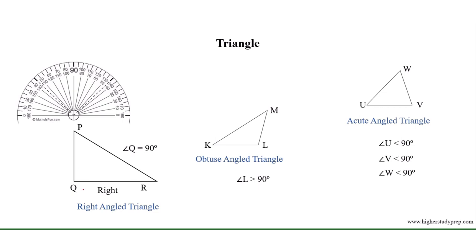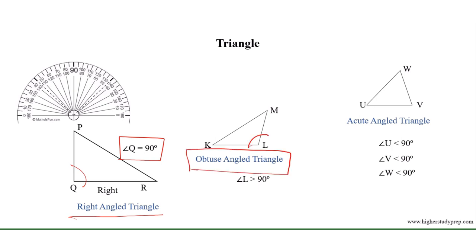A right angle triangle is a triangle where one angle is equal to 90 degrees. An obtuse angle triangle is a triangle where one angle is greater than 90 degrees. And an acute angle triangle is a triangle where all three angles are less than 90 degrees.